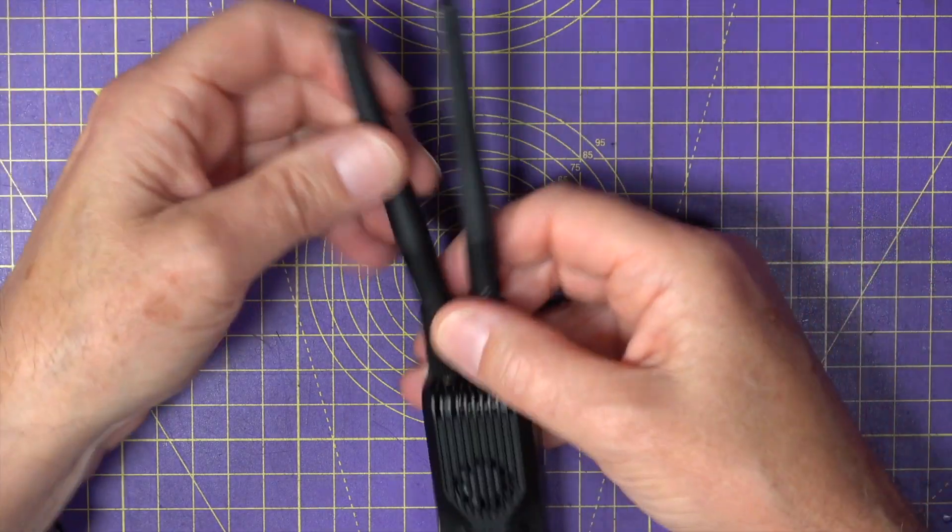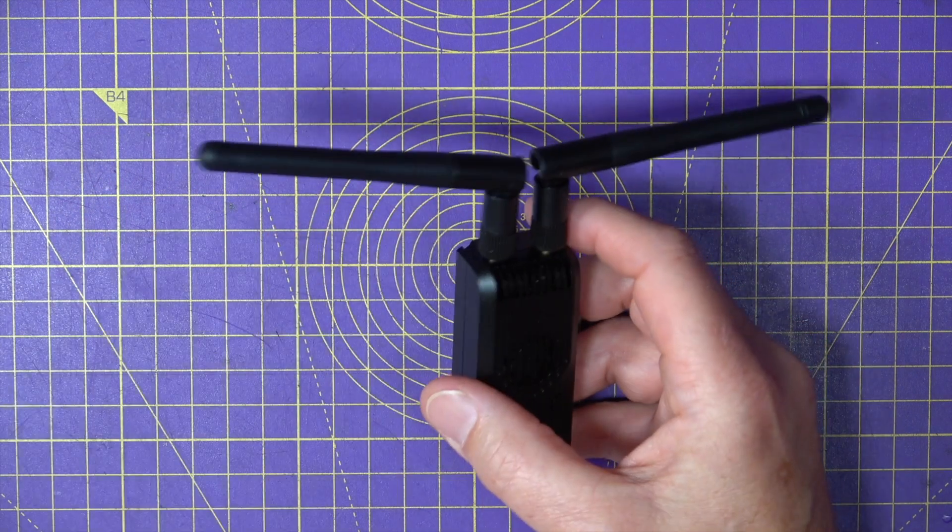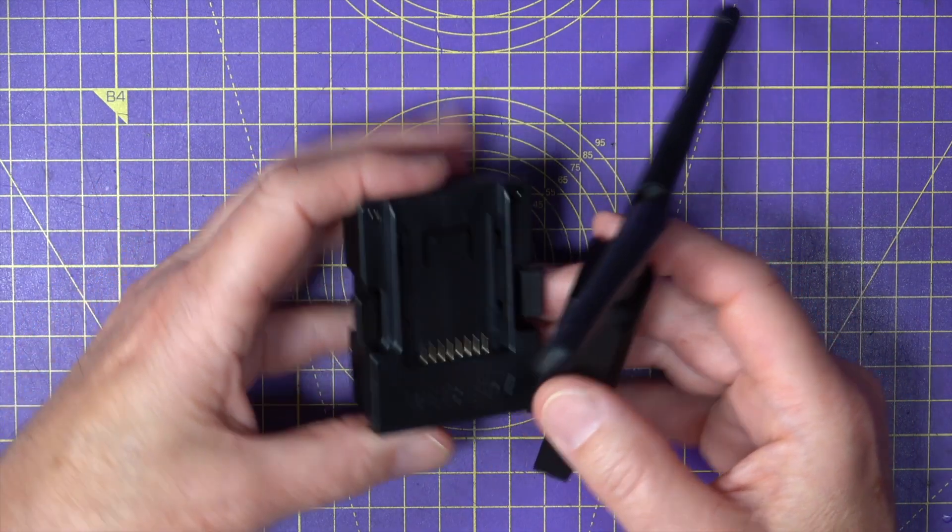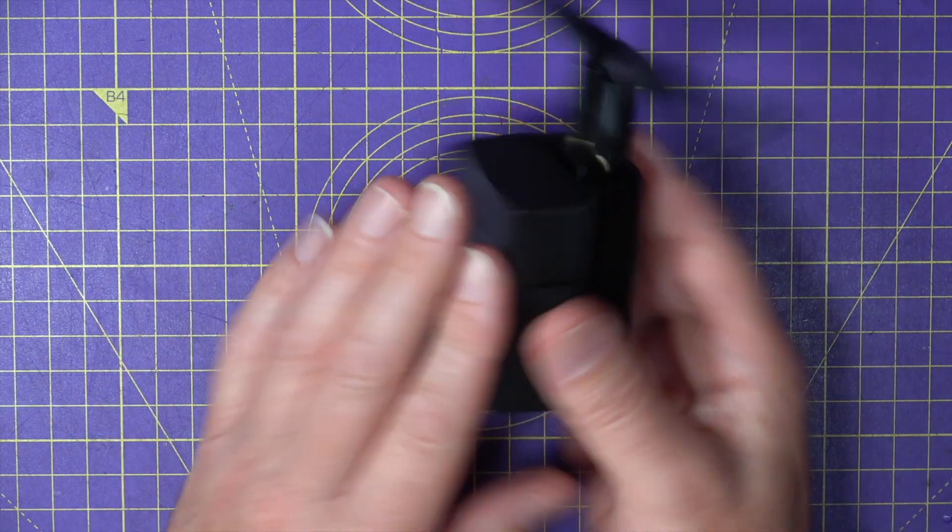And if you want to use this on a full-size radio with a JR module slot, BetaFPV provide this JR adapter. You just plug that in there and then you can plug that into your full-size radio.